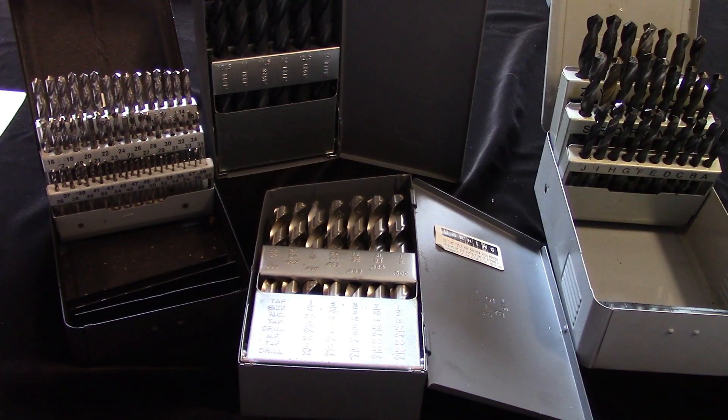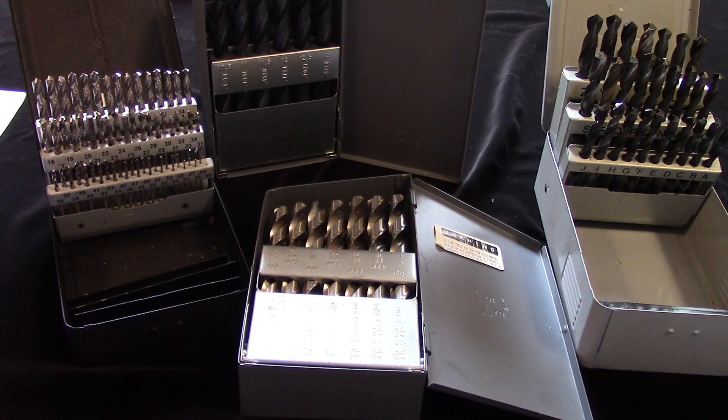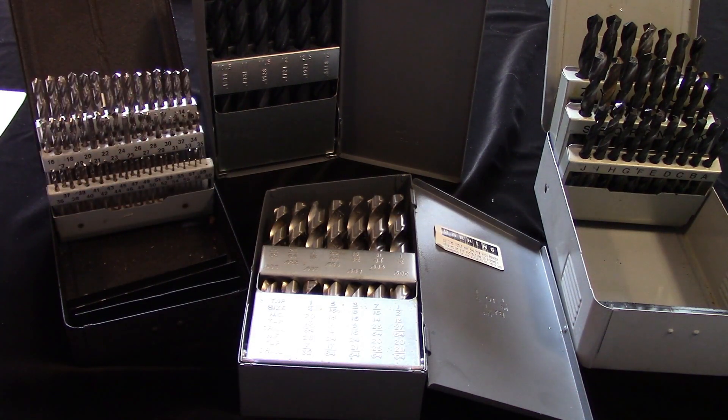The metric index contains drills from one millimeter to thirteen millimeters in half millimeter increments. Like the fractional index, larger and smaller drills can be purchased individually, as can drills in finer increments than half a millimeter.